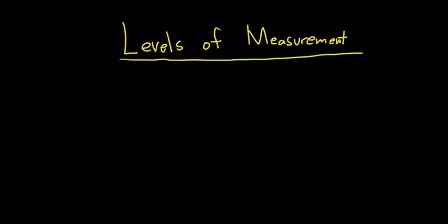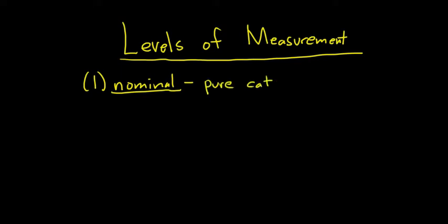The first level of measurement is called the nominal level. Nominal data are pure categories — like brand of shoe or brand of car. There is no natural ordering for the categories. For example, flavors of ice cream like chocolate, vanilla, etc. — there's no natural ordering for these categories.